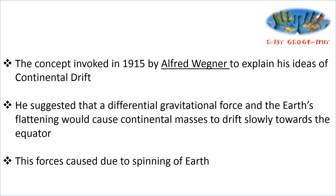Wegener suggested that differential gravitational force and Earth's flattening would cause continental masses to drift slowly towards the equator. Due to the rotation of Earth, there will be a flattening at the poles and bulging at the equator, which causes the continental masses to move towards the equator. Thus, pole-fleeing force is related to the rotation of Earth.